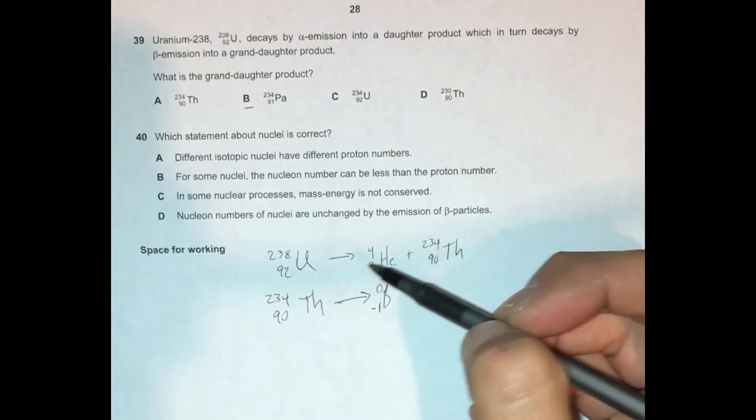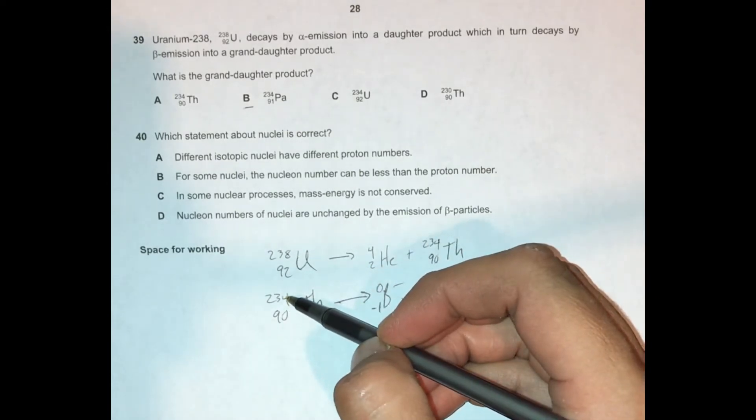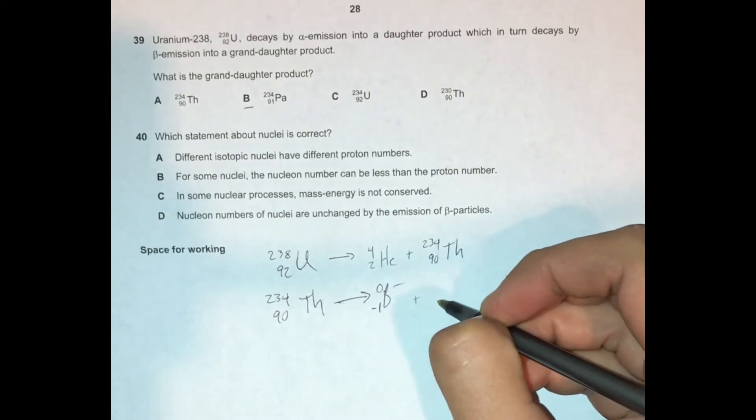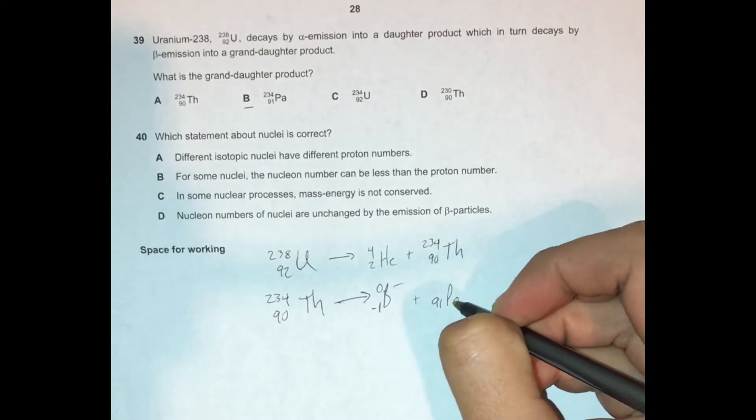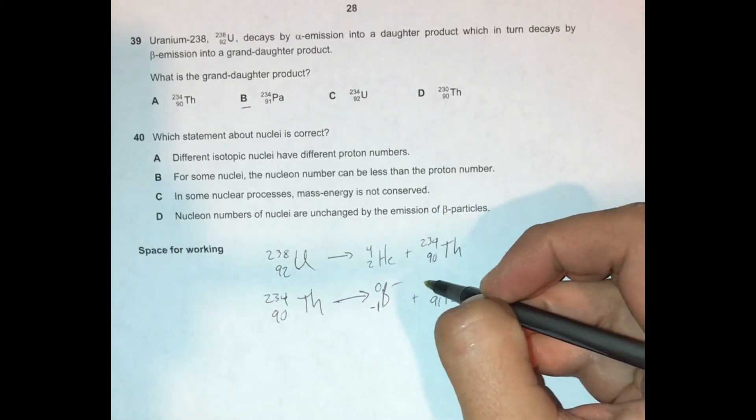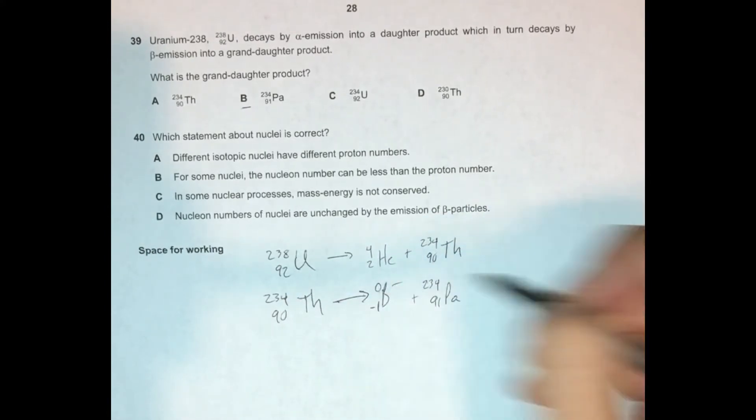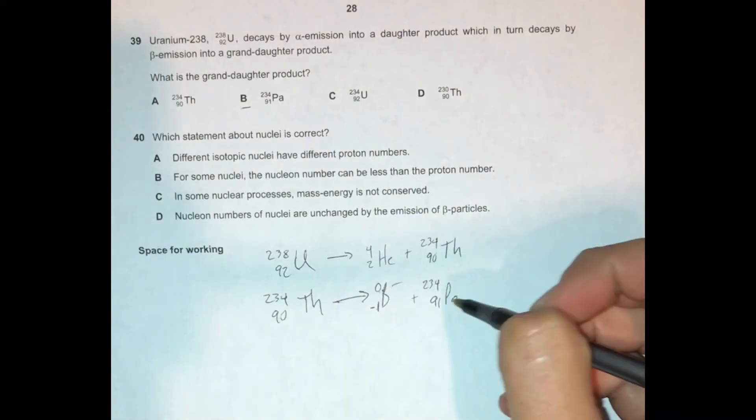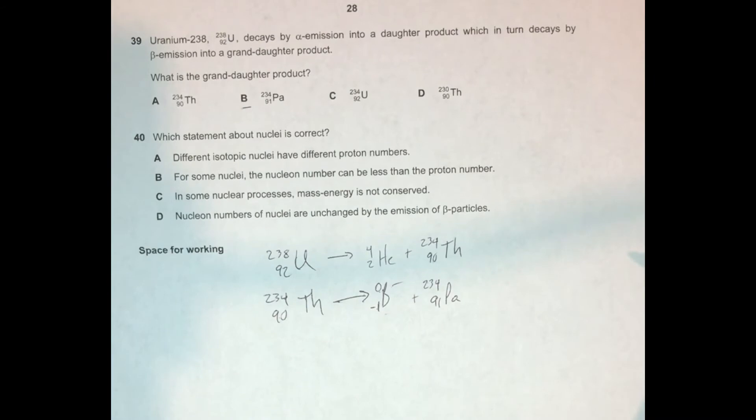But back to the question at hand, if we're converting one of these neutrons into a proton, well, then this is going to go up, and so this is where we're going to get our protactinium. And again, the nucleon number isn't going to change, because a beta particle is not a nucleon. And here we can see that 91 plus negative 1 is our 90. So the math really still checks out, too. And so the correct answer here is choice B for question 39.